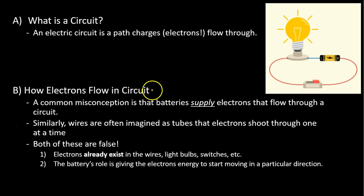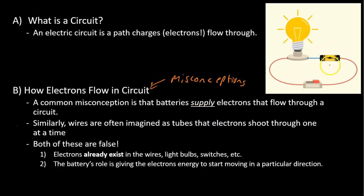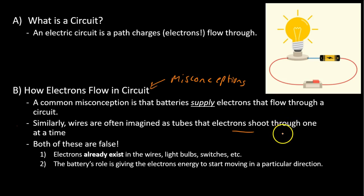Now, how electrons are moving in this circuit — let's address some misconceptions. A lot of people think the battery is the electron factory, the thing that is creating electrons and firing them through the circuit. That is incorrect. Similar to that misconception is the idea that these wires are like hollow tubes where electrons are simply firing through one by one — like a water park slide, going one at a time. Both of those ideas are wrong.